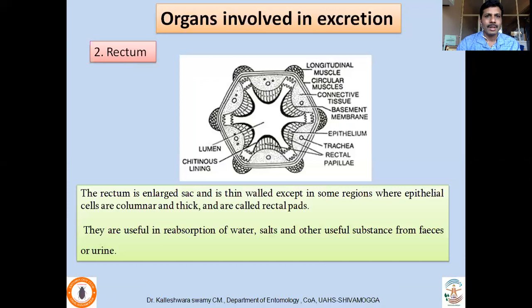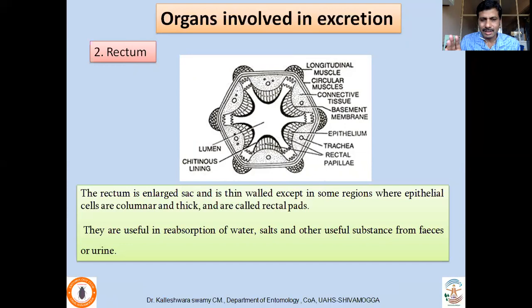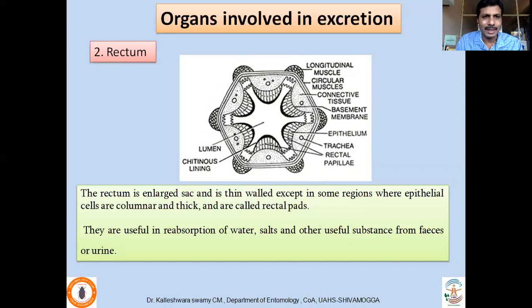Another important organ involved in excretion is the rectum, which is located in the hindgut region. The rectum is an enlarged tube; most of its epithelial cells are thin, but some are enlarged and called rectal papillae or rectal pads. These are also partly involved in excretion by absorbing beneficial nutrients before sending the excreta out of the body as feces.